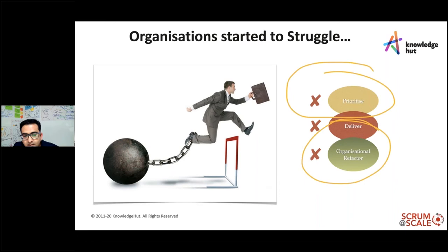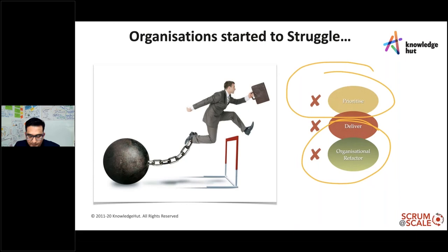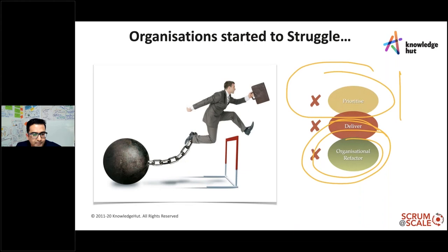As the number of Scrum teams within an organization grew, the volume, speed, and quality of output began to fall — because of cross-team dependencies, duplication of work, and communication overhead. The management structure was ineffective to achieve business agility. There were multiple priorities, and sometimes everything became number one priority. Organizations were able to function with a single Scrum team but struggled with multiple teams.